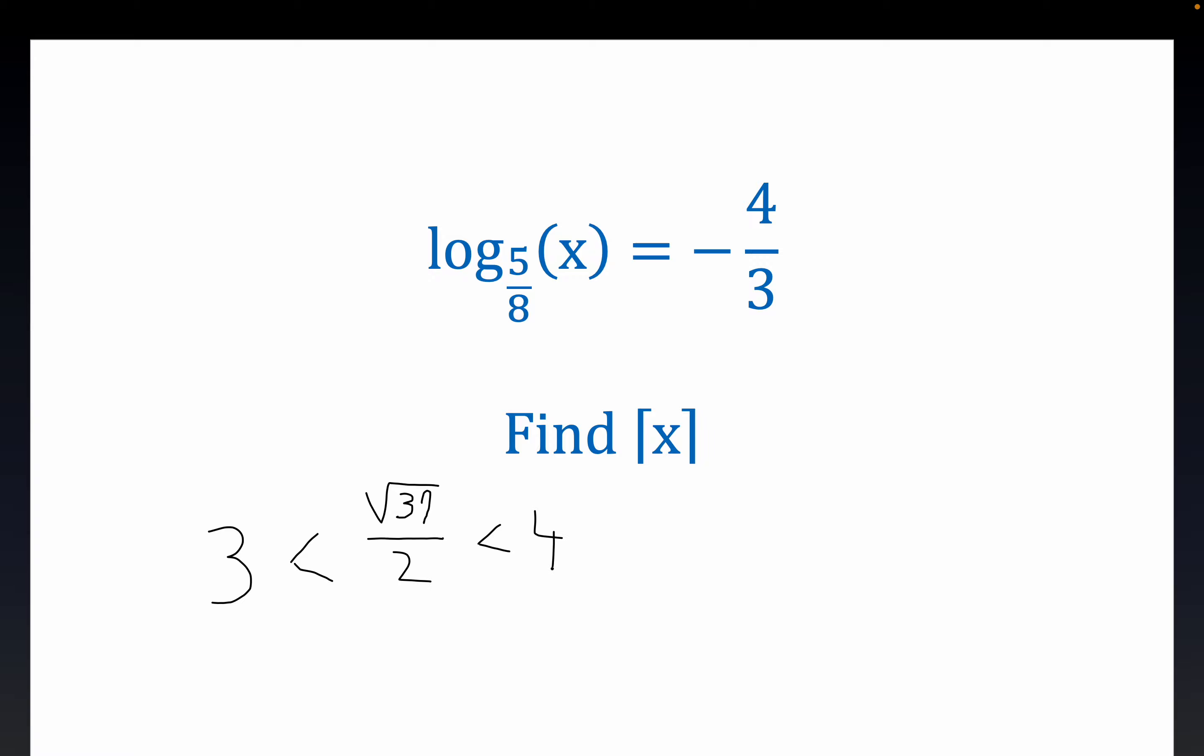Right, because what would you have to, we'd have to go all the way up to 8 over 2 just to get to 4. So we know that this number square root of 37 over 2 is a number strictly between 3 and 4, and it's much closer to 3 than 4.